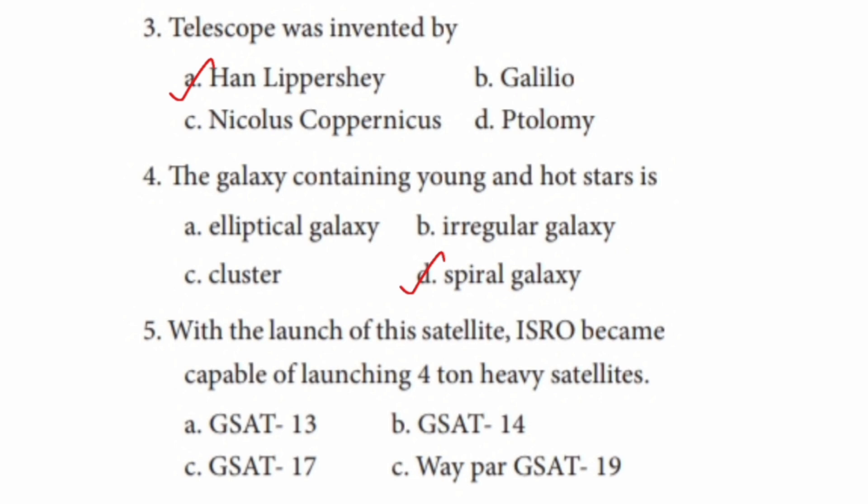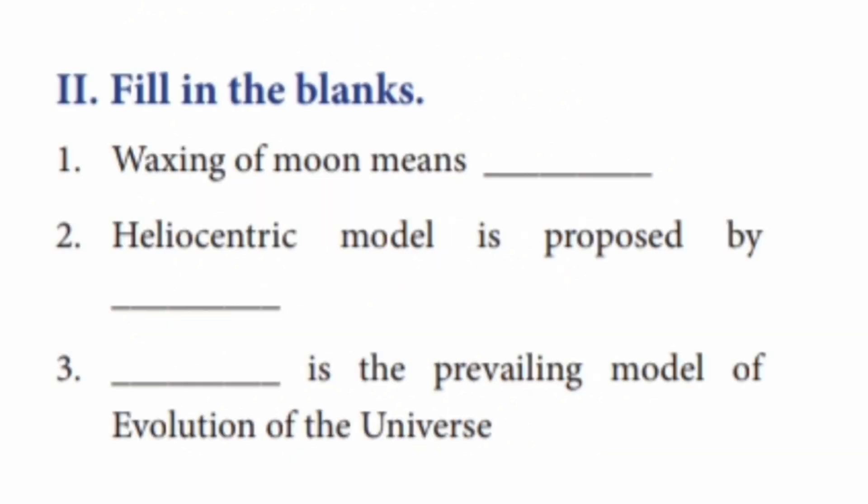Question 5: With the launch of which satellite did ISRO become capable of launching heavy satellites of 4,000 kg? The correct answer is GSAT-19.